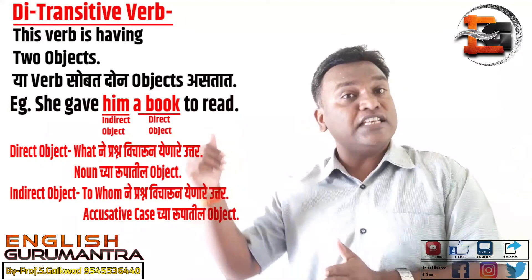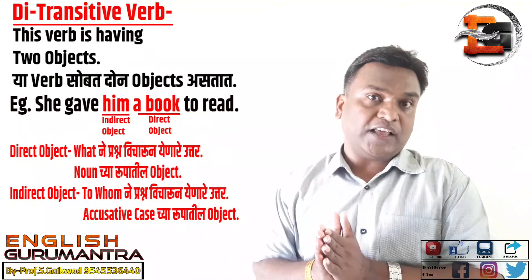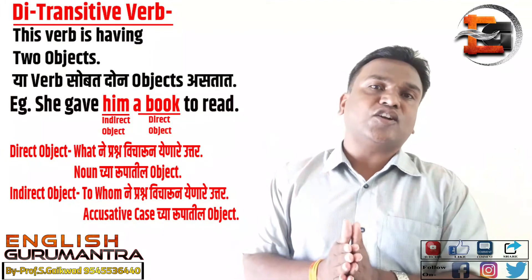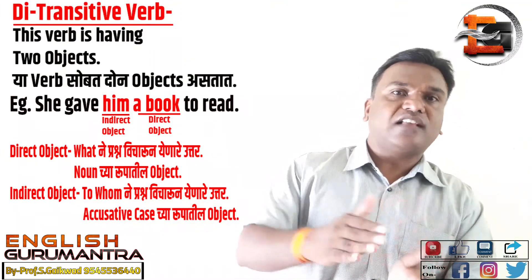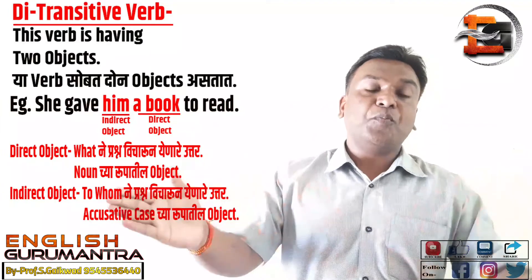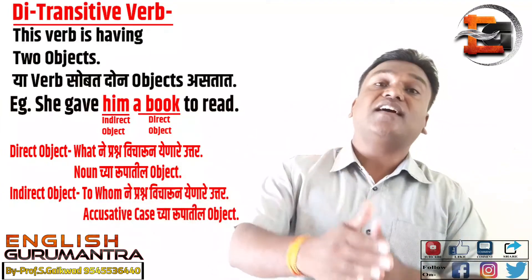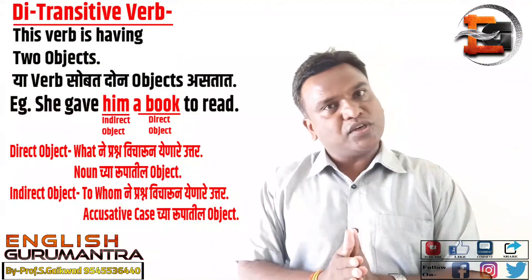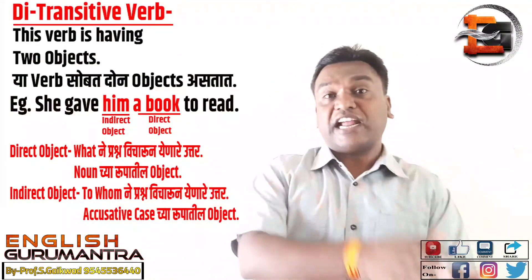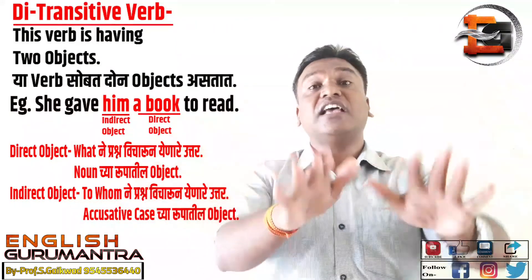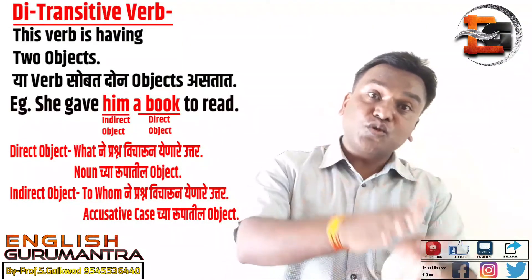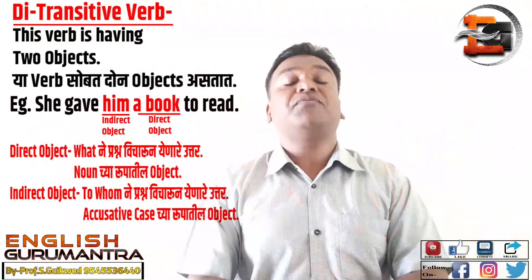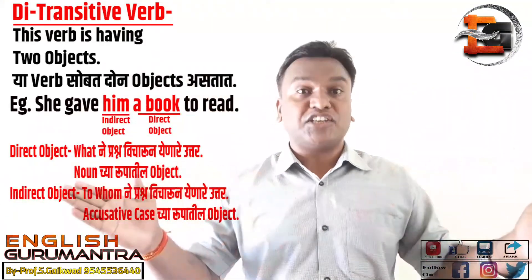For example: 'Granny told me the story.' 'The story' is the direct object — the action goes to it first. 'Me' is the indirect object — answered by 'to whom.' These two objects are considered direct object and indirect object, and the verb here is called a ditransitive verb.